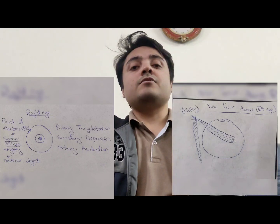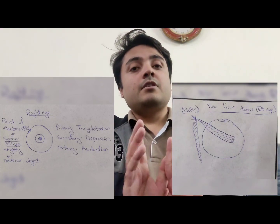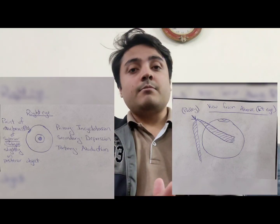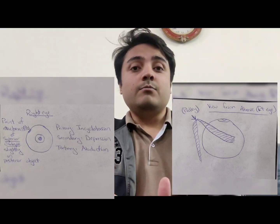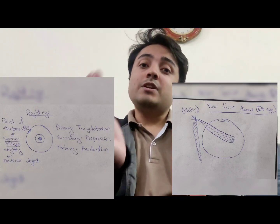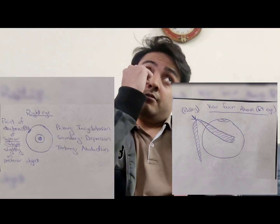Now let's come to the oblique muscles. In my opinion, the oblique muscles are what get doctors so frustrated and confused. Let's discuss the superior oblique first. The superior oblique is attached on the superior lateral aspect of the eye. Look at the diagram — if this muscle contracts, what do you think will happen? The eye will move inward in a swinging, rotating pattern.